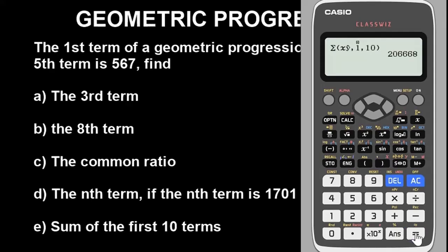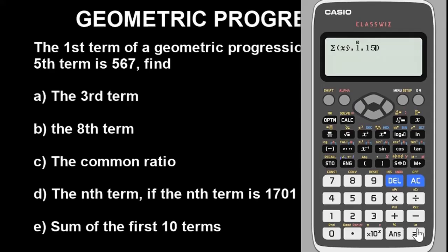The answer is 206,668 — that is the sum of the first 10 terms. If you were asked for the sum of the first 9 terms, simply change 10 to 9 in the sequence and recalculate. That is basically how you use the Casio fx-91ES or fx-570ES ClassWiz to find any term, the nth term, the sum, and the common ratio of a geometric progression.